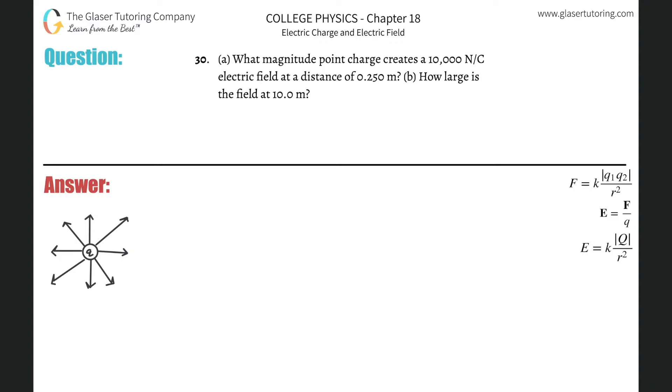Number 30, letter A. What magnitude point charge creates a 10,000 newton per coulomb electric field at a distance of 0.25 meters?